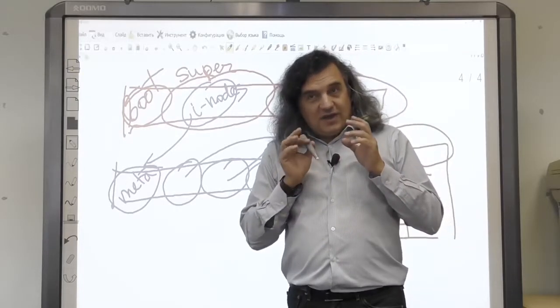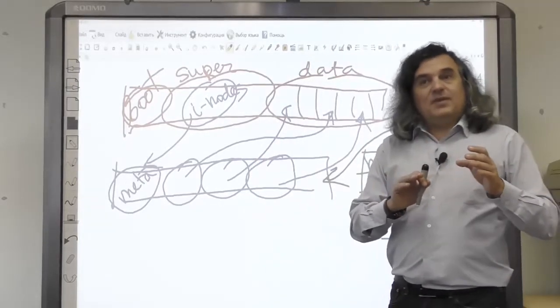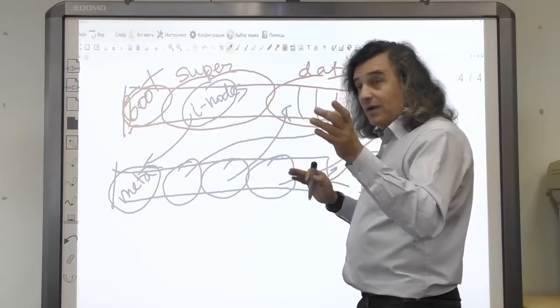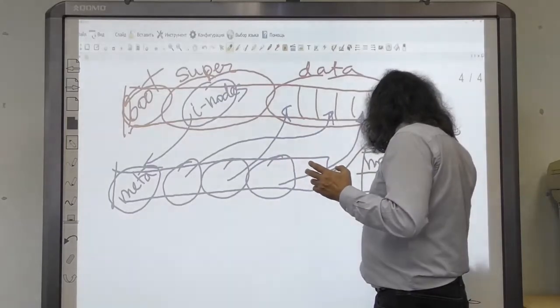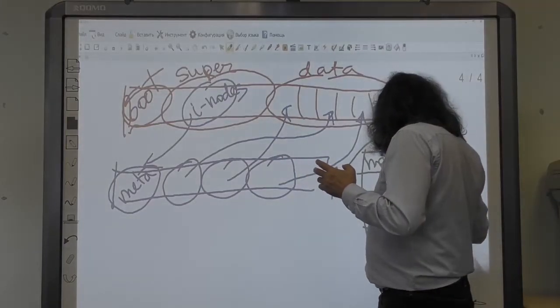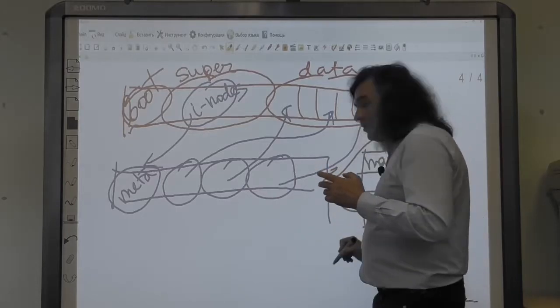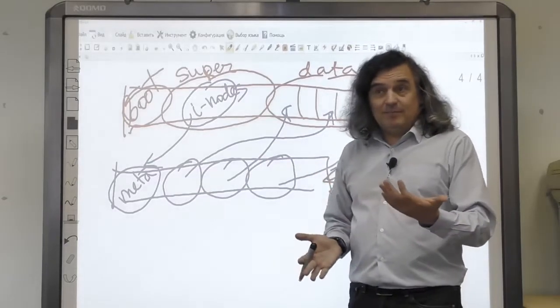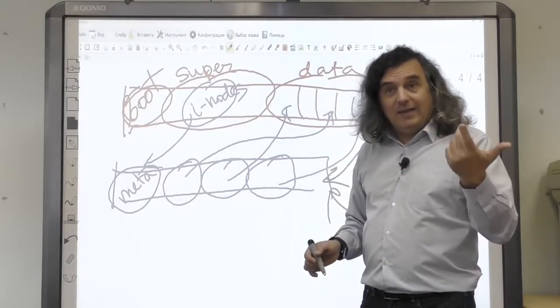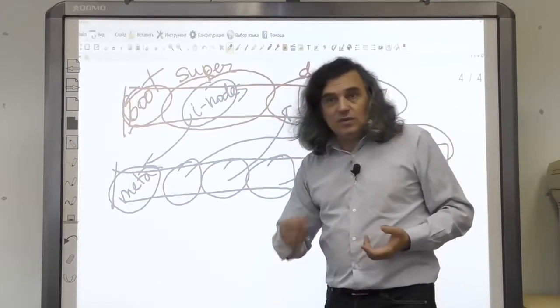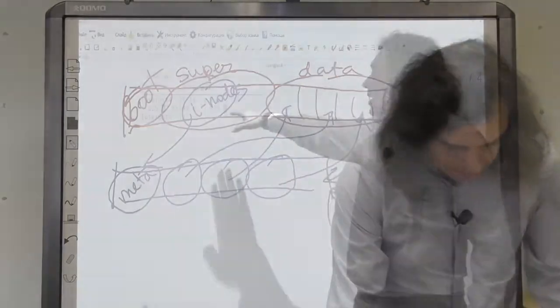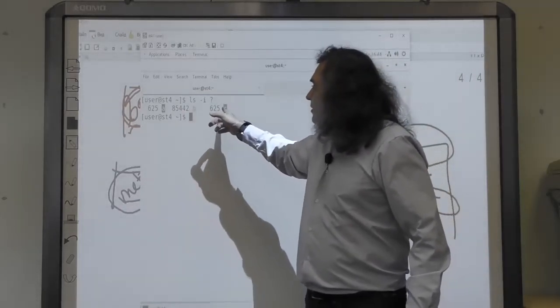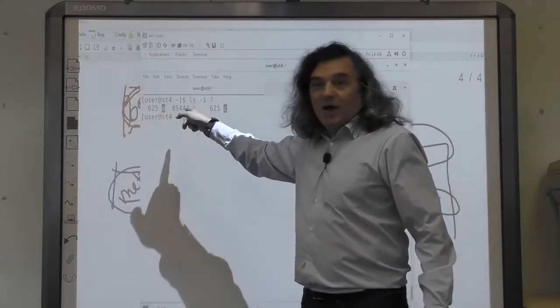We can have multiple directory entries associated with one inode, and this is called a hard link. We can see this with the ls command with the inode option. As we can see, the A and C files relate to the same inode.